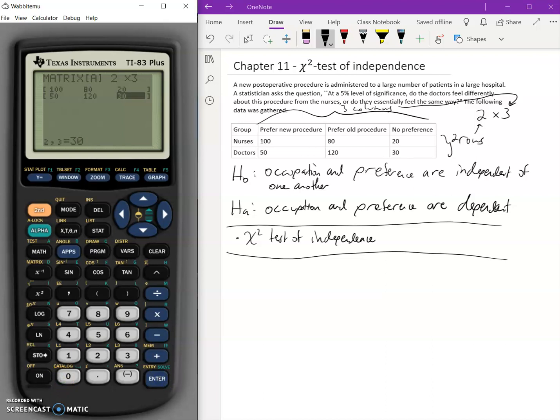Now when you go and press stat and you go over to tests, you're going to scroll down and eventually you will come across the option for the chi-square test. The chi-square test is specifically the chi-square test of independence. We press enter. Our observed needs to be the same place that we entered our data. These are our observed values. So this whole chart here, this is the observed.